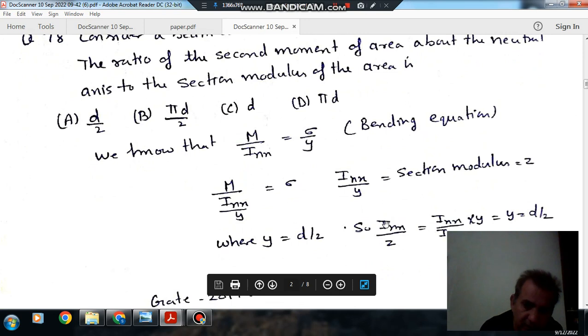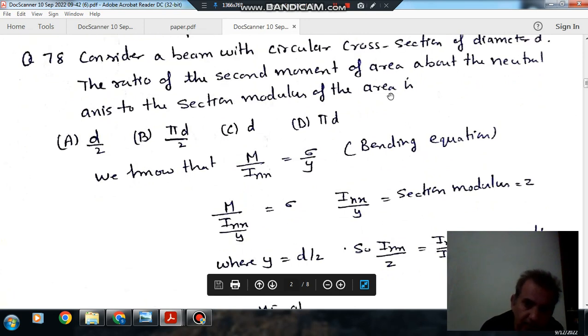The ratio of second moment of area about the neutral axis to section modulus is y, and y is d by 2.